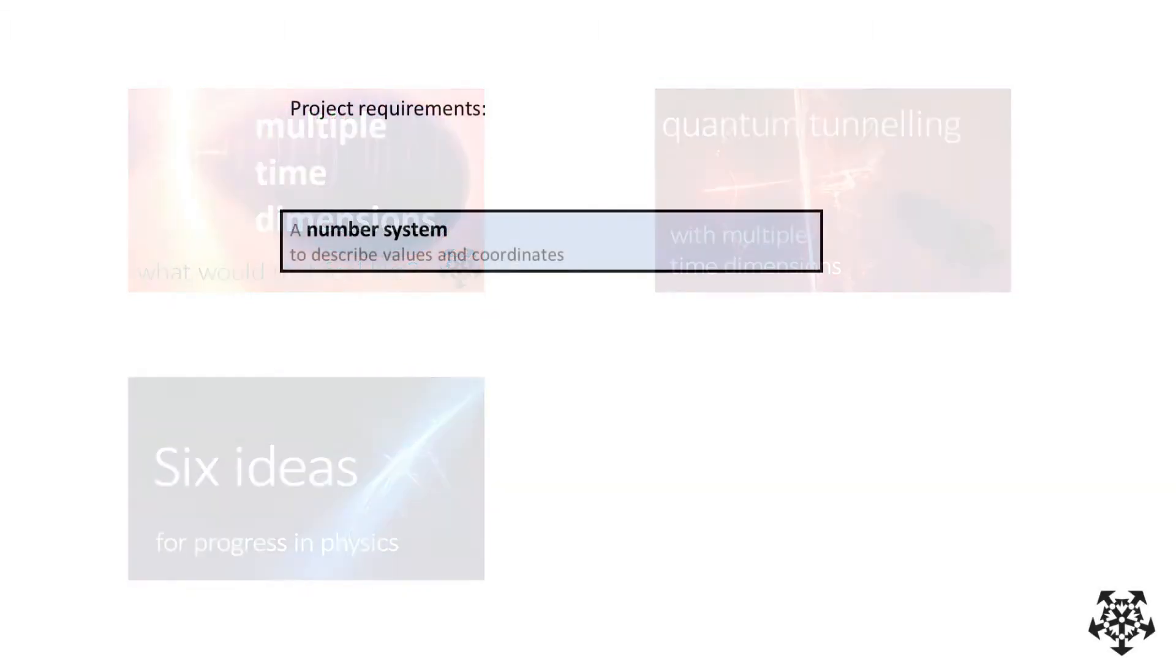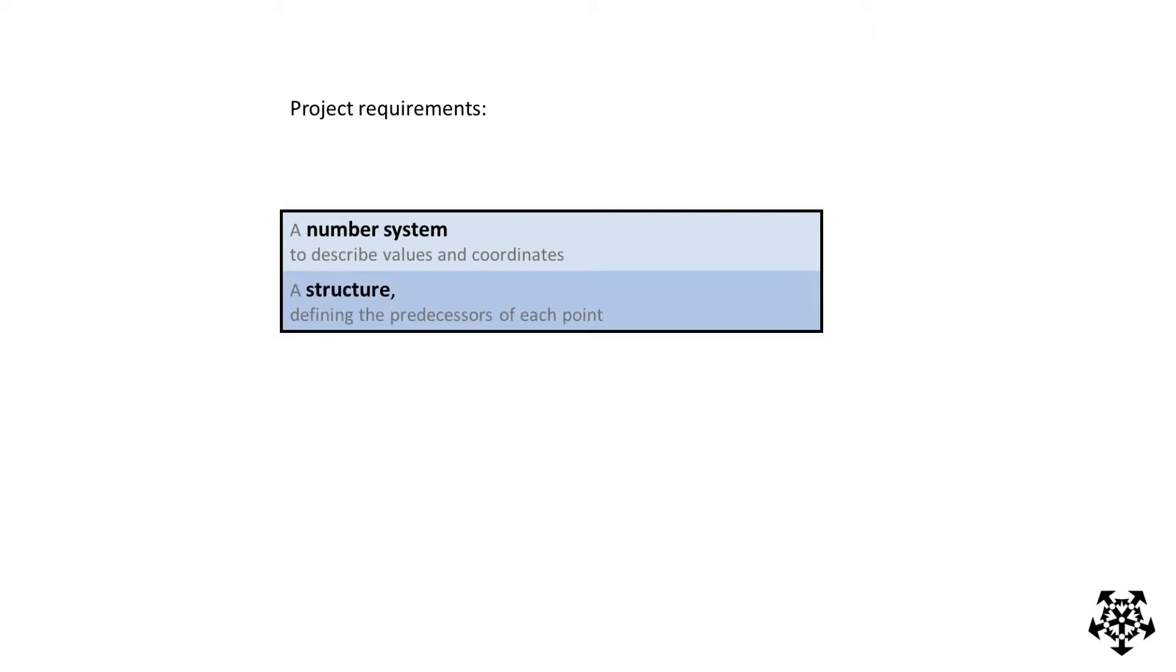We listed these four items required for that. A number system to describe values and coordinates, a structure defining the predecessors of each point,